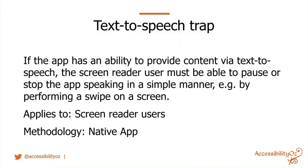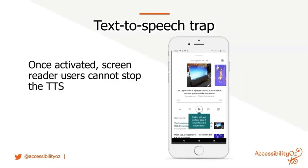A text-to-speech trap: if the app provides content via text-to-speech, the screen reader user must be able to pause or stop the app speaking in a simple manner, such as a swipe. This applies to screen reader users only and to native apps only. In Pocket, you can tap to listen to an article, but once playing there's no easy way for a screen reader user to pause the audio — using normal pause methods pauses the screen reader, not the text-to-speech.